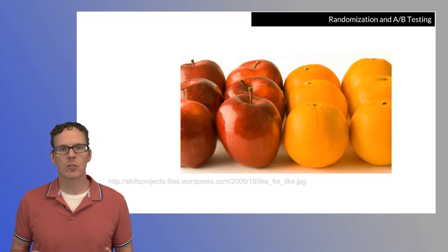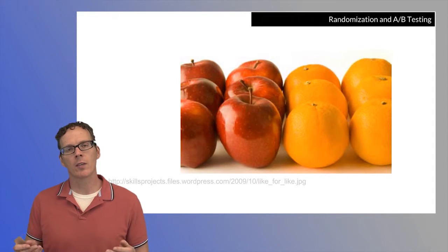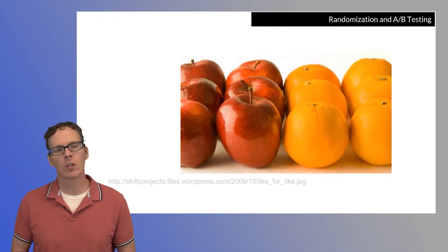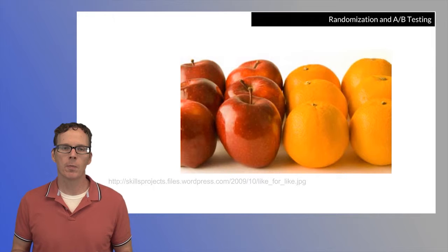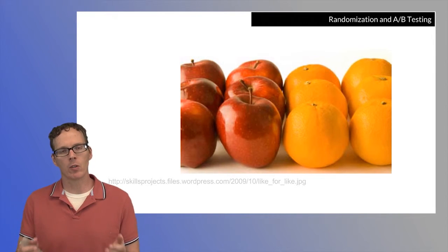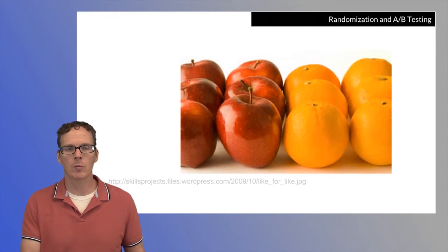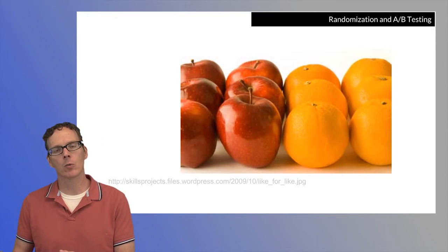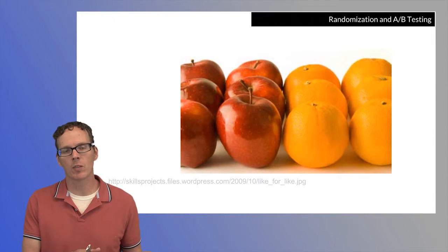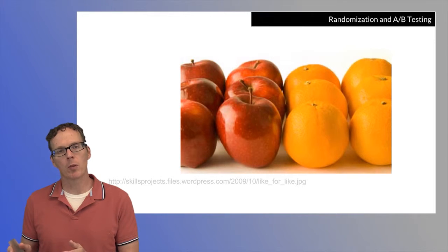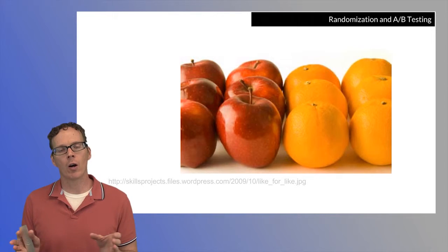We'll talk about randomization in A-B testing. Randomization is the process when you have a treatment or something that you're interested in studying that has two levels of randomly assigning the observational units to those two levels. The classic example of this is in a medical trial where you have a drug and you give a random set of people the drug and another random set of people the placebo. The idea is that the group of people that receive the placebo other than receiving the drug or the placebo are otherwise similar.